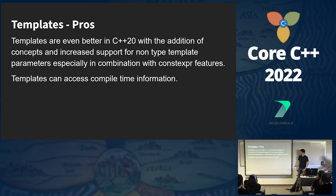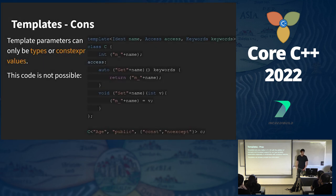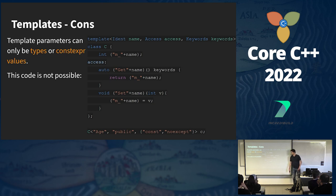There are many pros for templates. First, templates are even better now in C++20 with the addition of concepts, increased support for non-type template parameters, especially in combination with constexpr features. Also, unlike macros, a template can access compile-time information. There is a drawback to templates: template parameters can only be types or constexpr values.